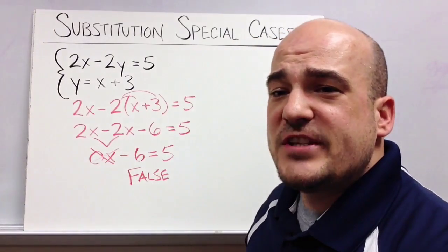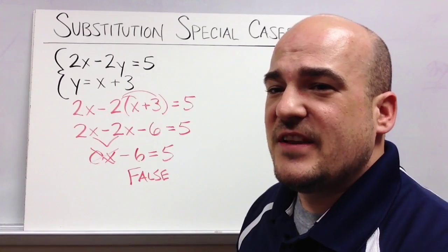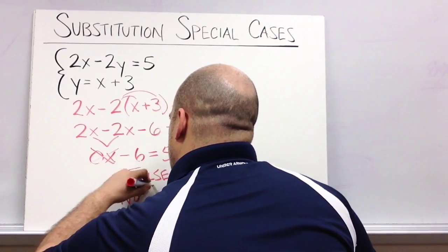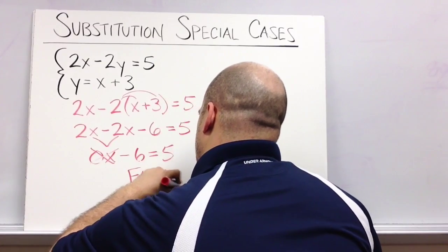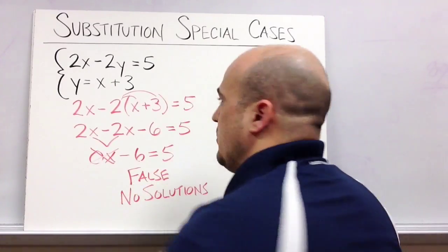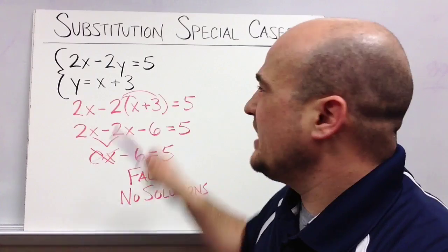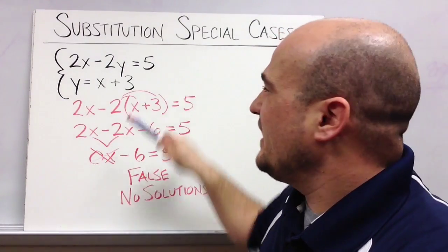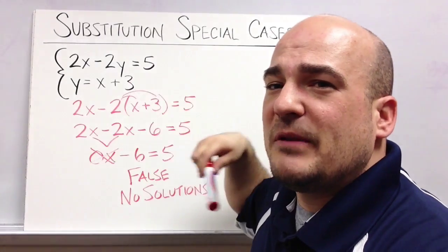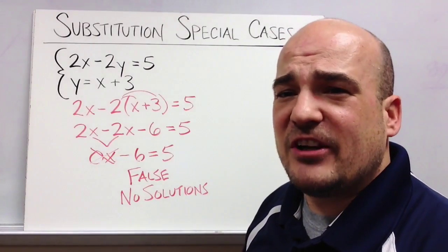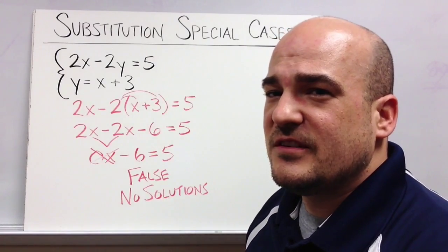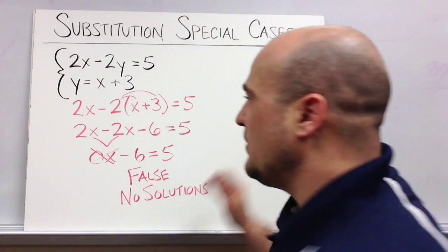And if a true statement means infinite solutions, then a false statement must mean no solutions. So once again, if we were to think about these lines as a picture, as a graph, then we could think of these two lines as on the coordinate plane but never touching each other. They're never going to cross. And so therefore we have no points where these lines are equal to each other or no solutions. Let's try one last example.